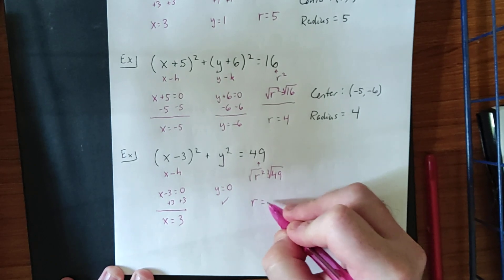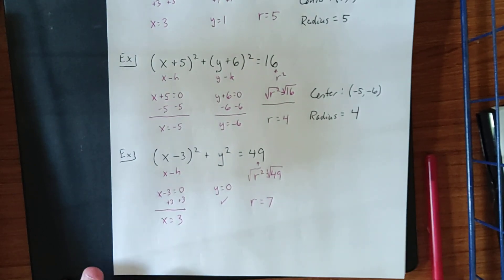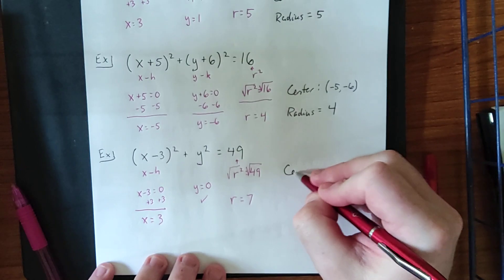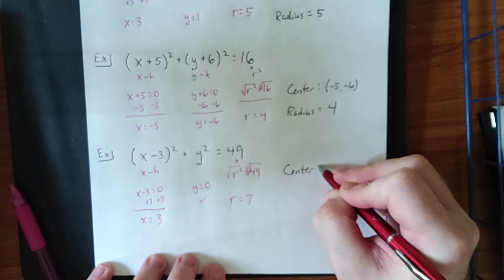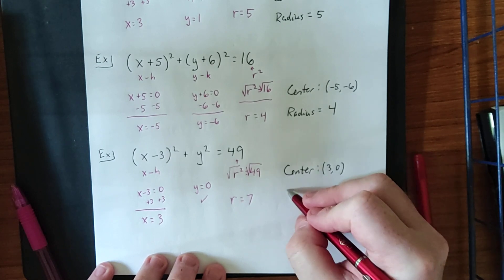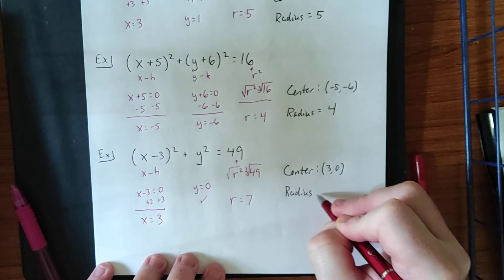One step of algebra will allow us to solve for r. Again, we don't need a plus or minus. We can just say r is equal to 7. We don't need a plus or minus because the radius is referring to a distance, and distance is something that is not negative. So, putting it together, we get that our center is located at 3, 0, and we get a radius that is equal to 7.